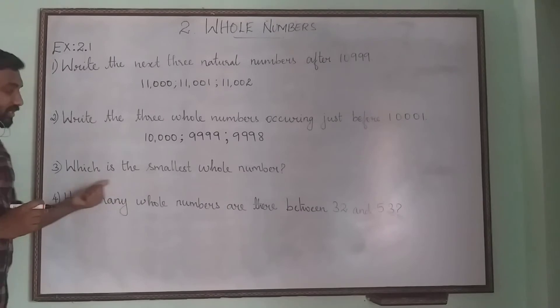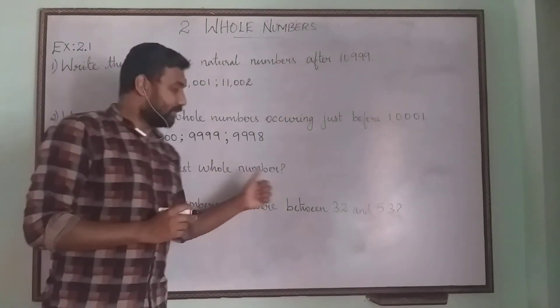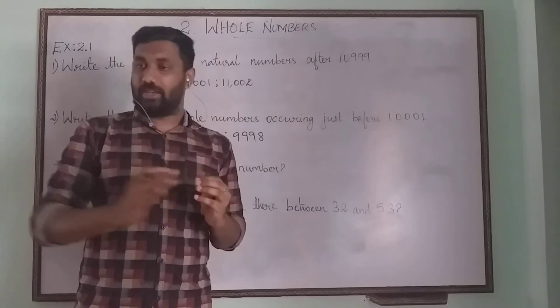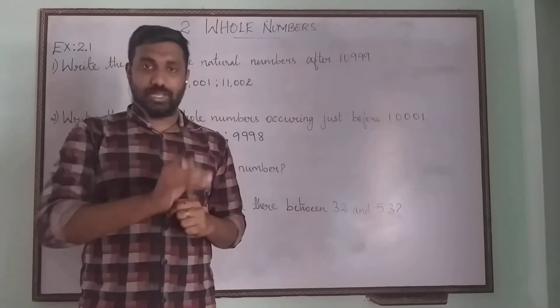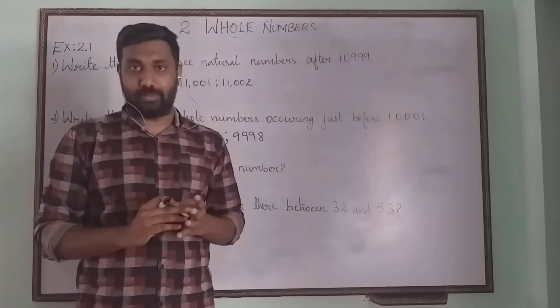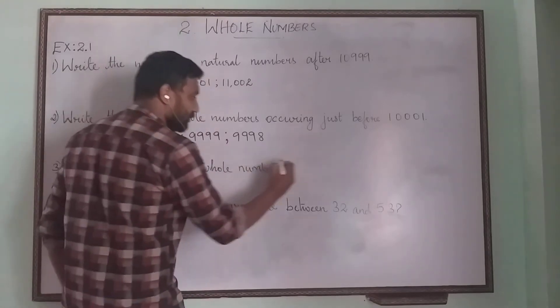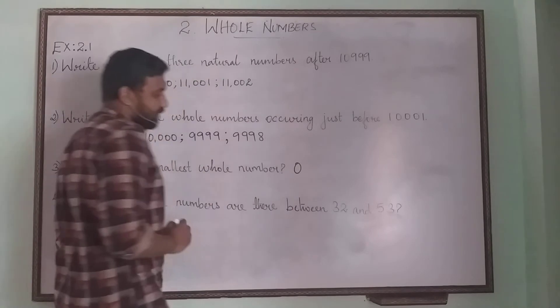Question 3: which is the smallest whole number? We know natural numbers start from 1 and go up. If you add a 0 in front, it becomes whole numbers. So which will be the smallest one? It is 0. So the answer is 0.